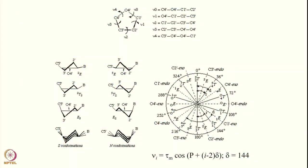We continue with the discussion of the DNA and RNA structures. The ribose ring, or the 5-membered ring, is the important element. The elements of the DNA structure are the phosphate backbone and the sugar ring, which is a 5-membered ring. We have to define the structure of the sugar ring and the structure of the phosphate backbone.